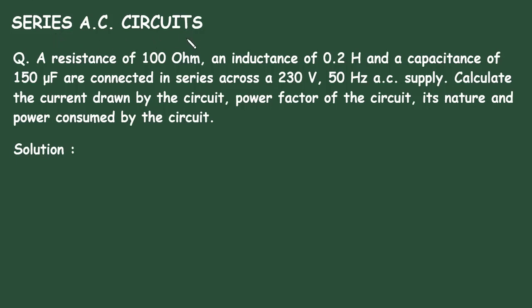Series AC Circuits. A resistance of 100 Ohm, an inductance of 0.2 Henry, and a capacitance of 150 microfarad are connected in series across a 230 volt 50 Hz AC supply. Calculate the current drawn by the circuit, the power factor of the circuit, its nature, and the power consumed by the circuit.